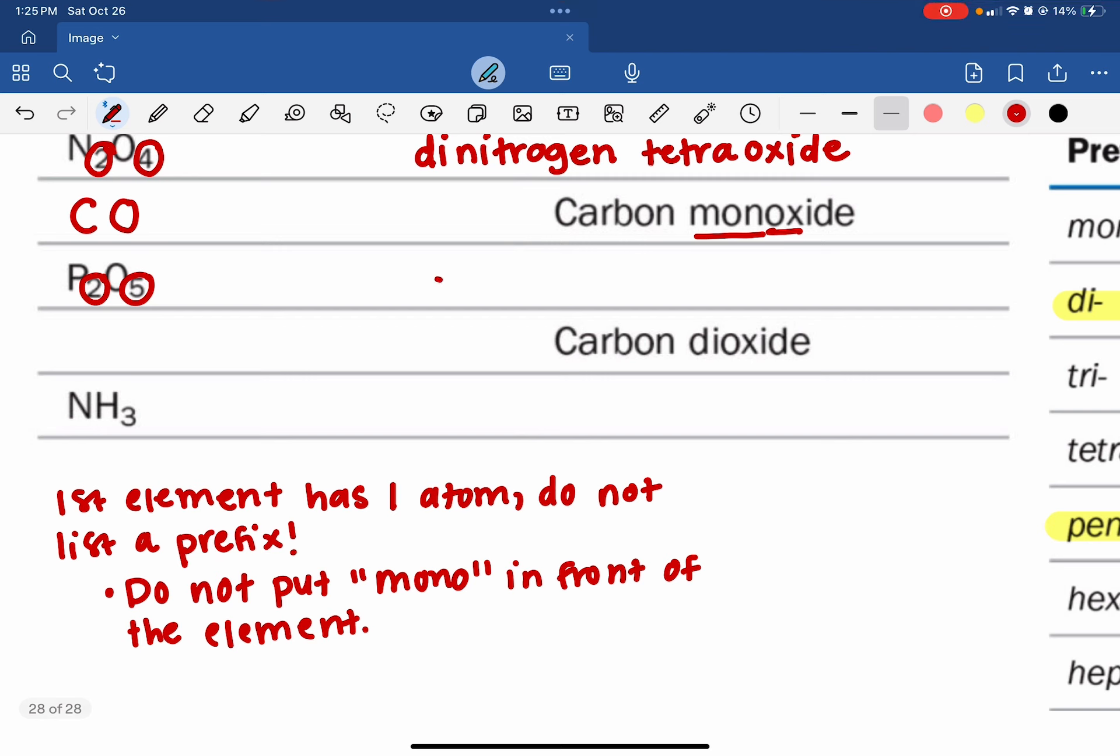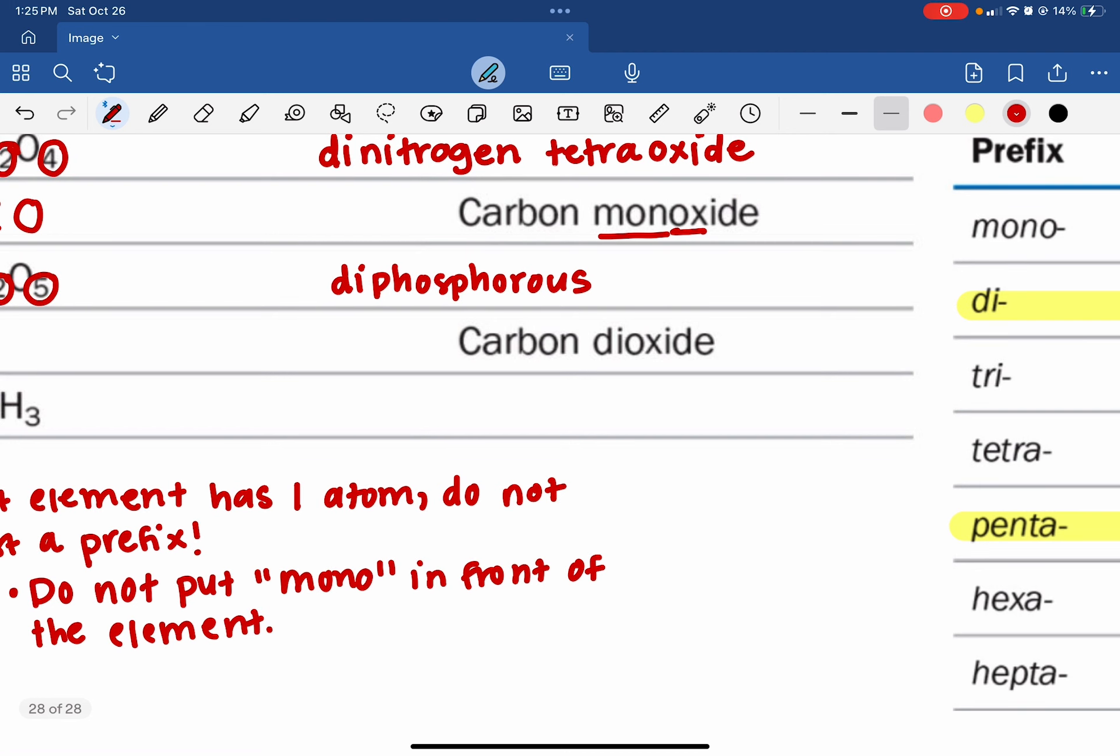So that would be di. And again, we list the first element with nothing changed at all about it. So diphosphorus. And then we list our next one, which is penta. And then we list the first half of the second element with ide behind it. So this one, it would be oxide, pentaoxide.